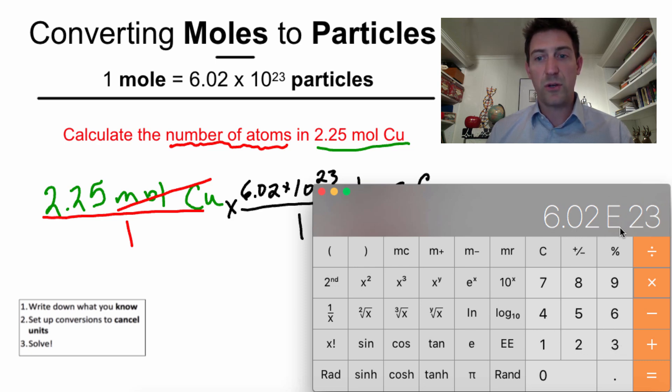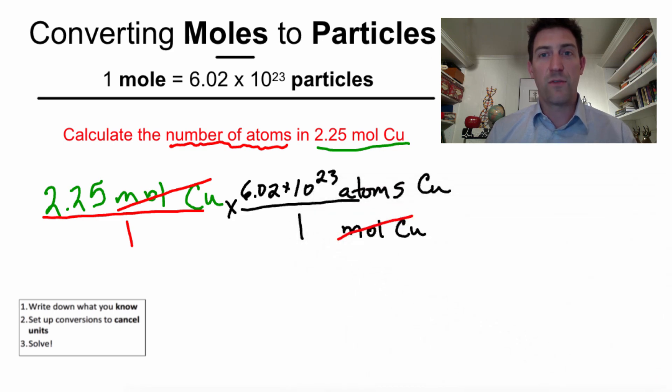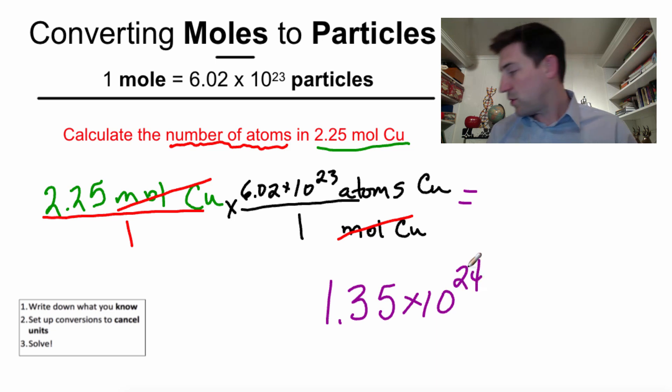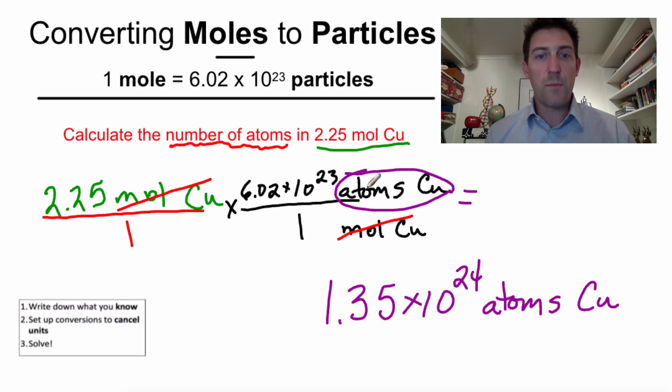6.02, this E, they just shortened it up to one E, exponential notation, 6.02 times 10 to the 23. No parentheses, no worries, no nothing. Enter. Look, I've got 1.35 with some other numbers. E24. That E means times 10 to the. So, I've got 1.35 times 10 to the 24. Let's go ahead and write this in. We've got 1.35 times 10 to the 24. And our units on this are atoms of copper. It's the only thing we had left. So, here, this is what makes the mole so useful.